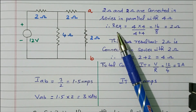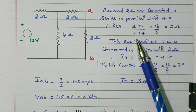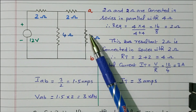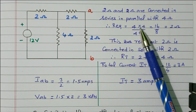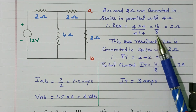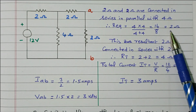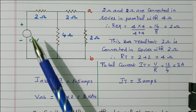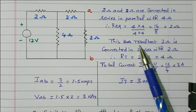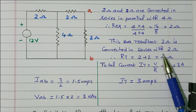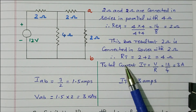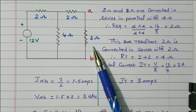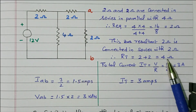The equivalent resistance is R1 times R2 divided by R1 plus R2. R1 is 4 ohm and R2 is also 2 plus 2 = 4 ohm. So 4 times 4 divided by 4 plus 4 equals 16 divided by 8, which is 2 ohm. This branch is 2 ohm, and that is connected in series with the other 2 ohm. So the final total resistance is 2 plus 2 = 4 ohm.